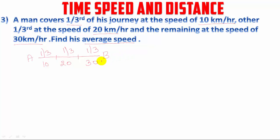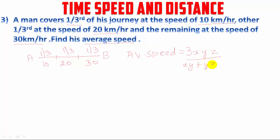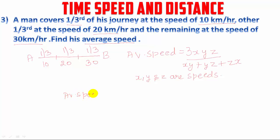There is a different formula for three equal distances. Average speed equals 3xyz divided by xy + yz + zx, where x, y, and z are the three speeds. So now we can calculate the average speed using this formula.